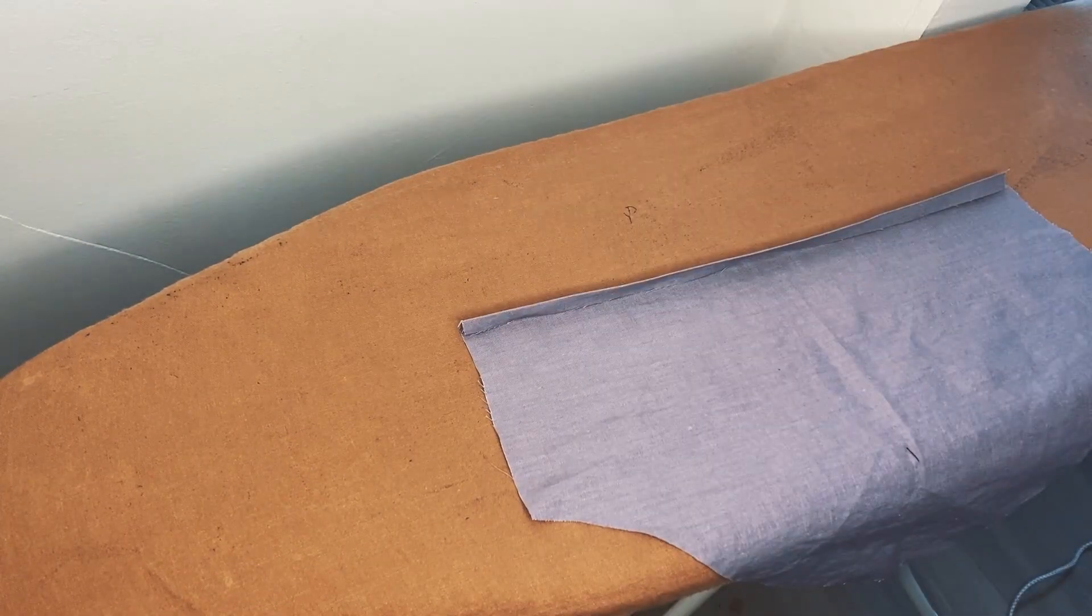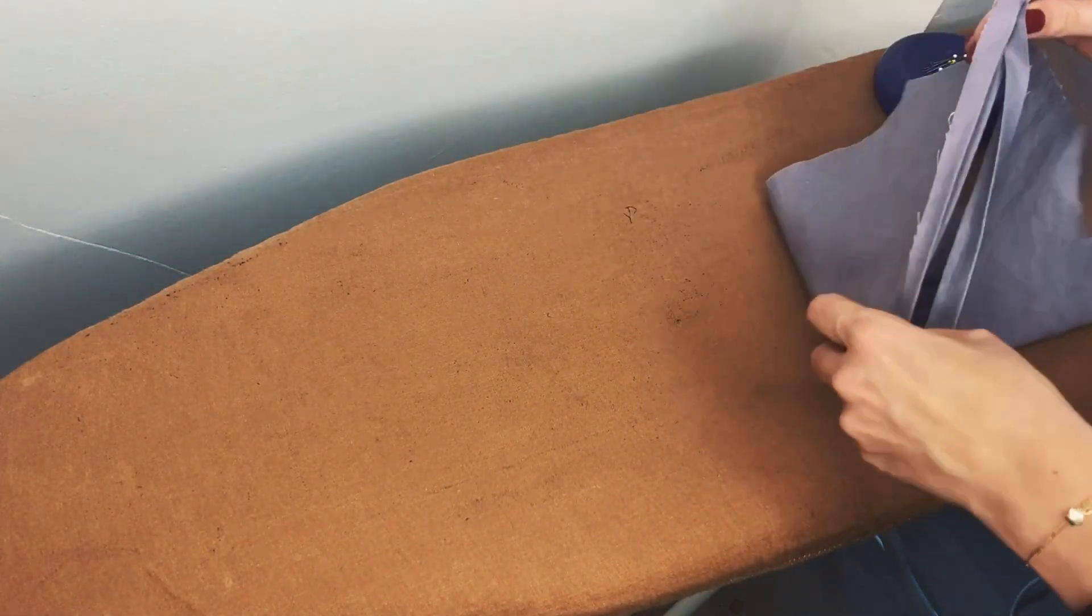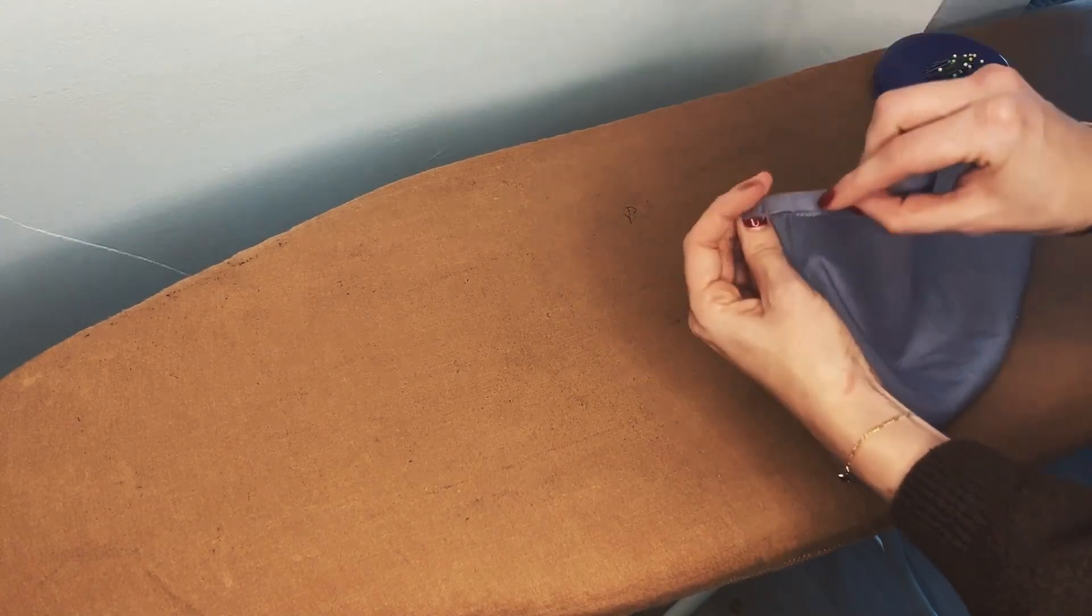Fold the bottom back open and put the two side seams on top of each other. The right sides of the fabric should be facing each other. Make sure the fold lines align. Stitch the side seams and finish them with an overlock stitch.